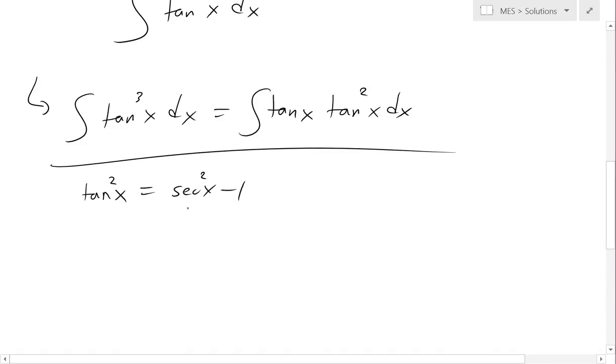So we can plug this in, and we get: equals integral of tan x times (secant squared x minus 1) dx.